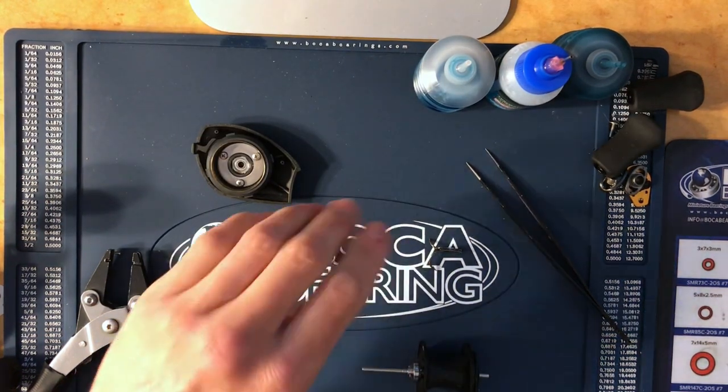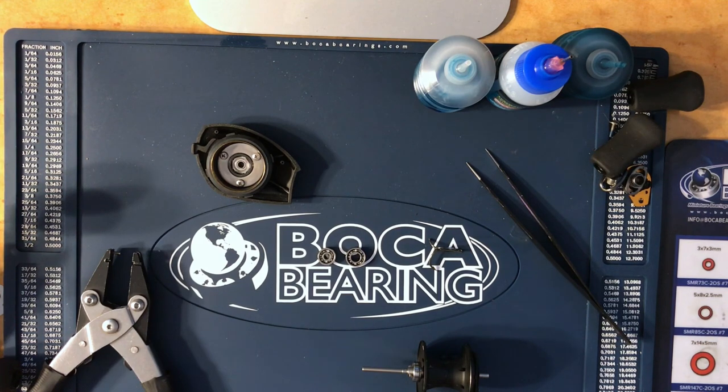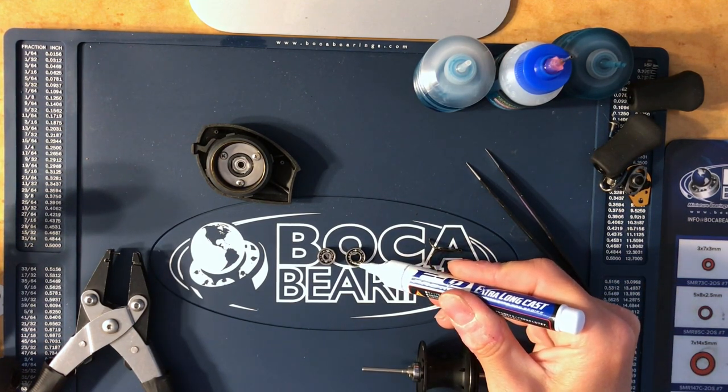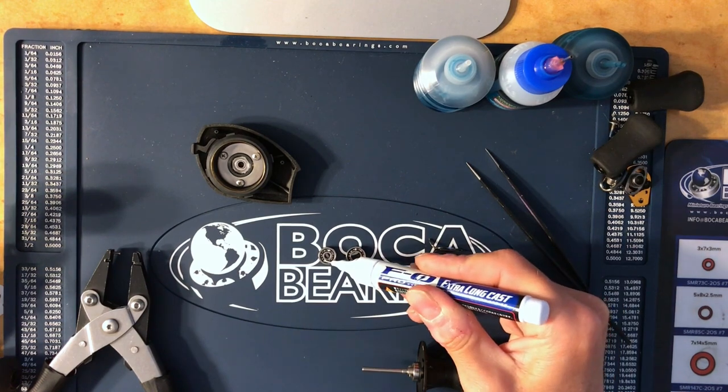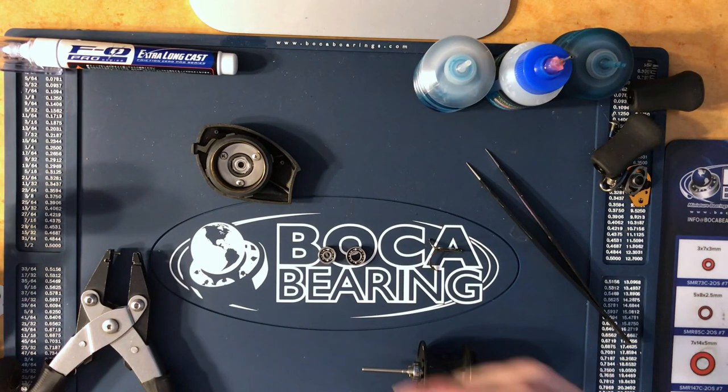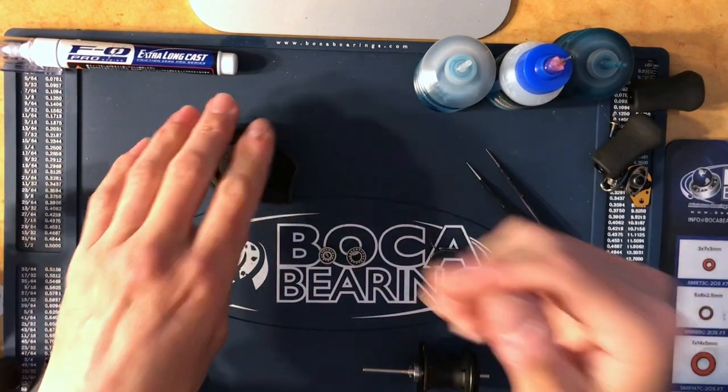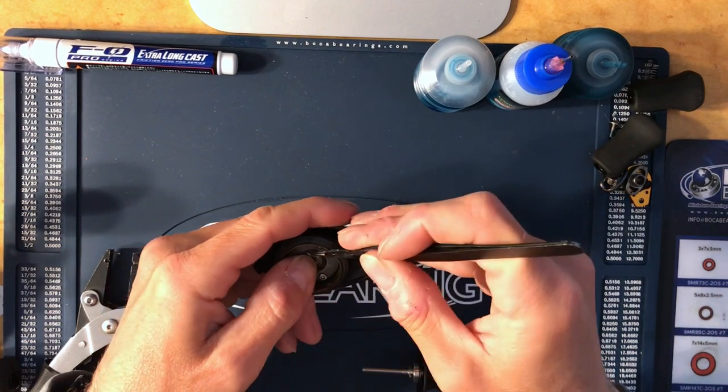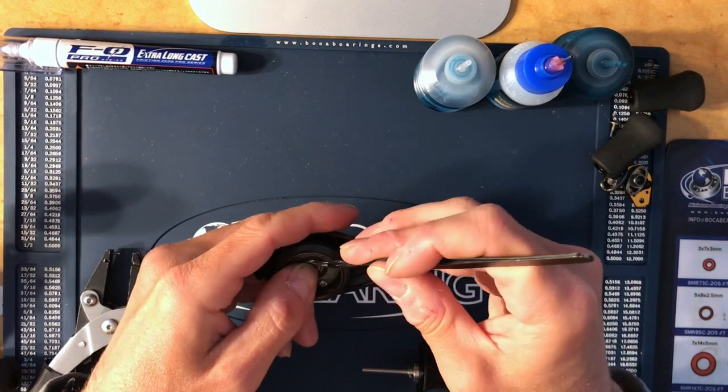Then I'm going to do one drop of oil per bearing before I install. You can run them dry, they're just louder. When they're dry they're just really loud, so I just do one drop, kind of cools them down. So take this retaining clip out.